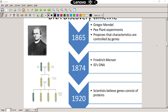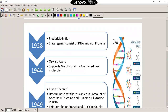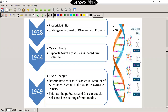In 1920, scientists believed that genes consist of proteins — they were incorrect. In 1928, Frederick Griffith stated that genes consist of DNA and not proteins. DNA does have a protein portion, but it's not just proteins. In 1944, Oswald Avery supported this by saying DNA is the hereditary molecule — that DNA passes genes and therefore characteristics from one generation to the next.